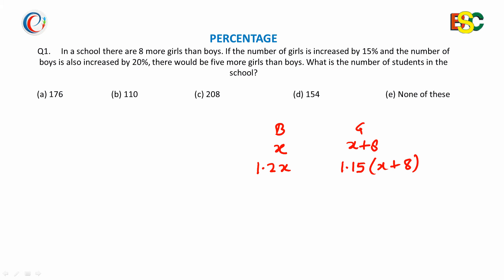Then there would be 5 more girls than boys. This means 1.15x plus 9.2 minus 1.2x is equivalent to 5.